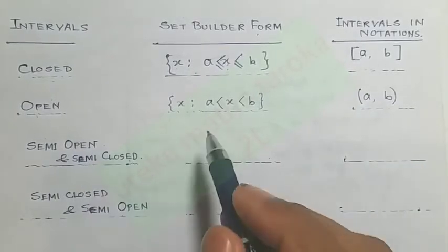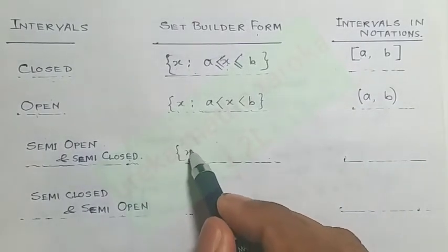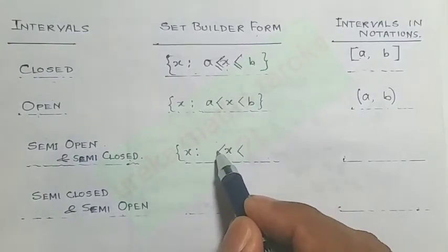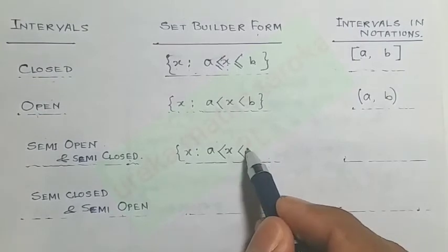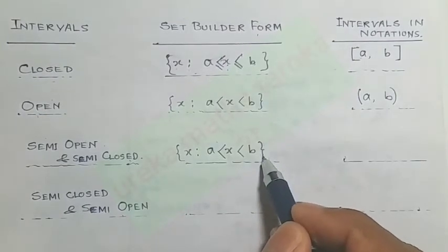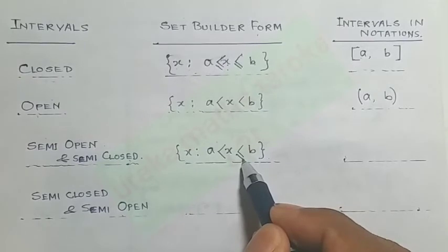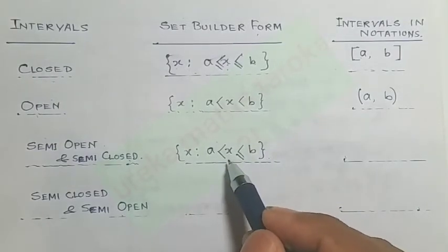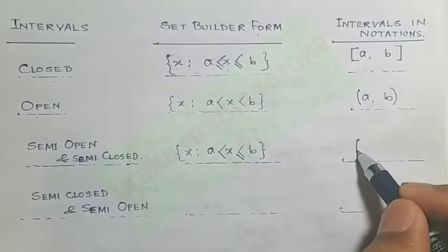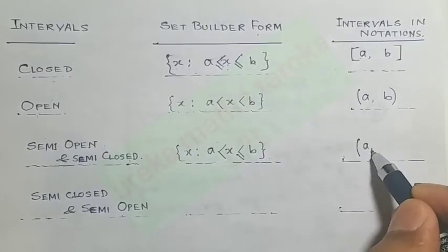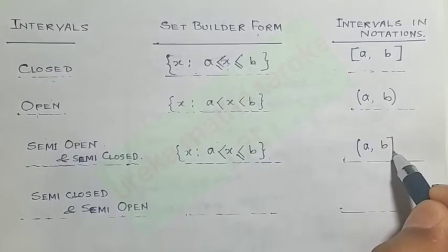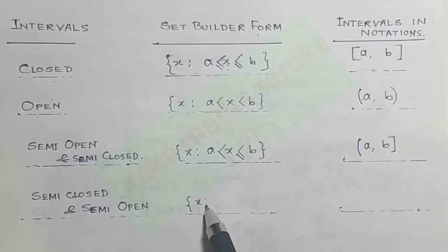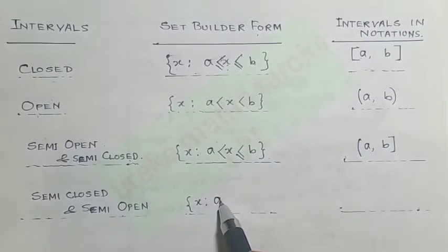For semi-open or semi-closed intervals, x lies between a and b, but one endpoint is open and one is closed. If b is closed and a is open, we exclude a using the parenthesis notation. In set builder format, we use a strictly less than symbol for the open side.